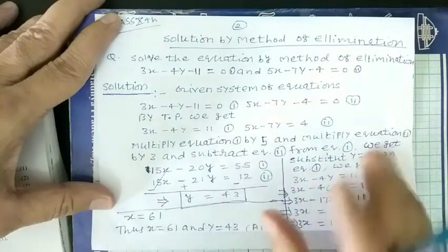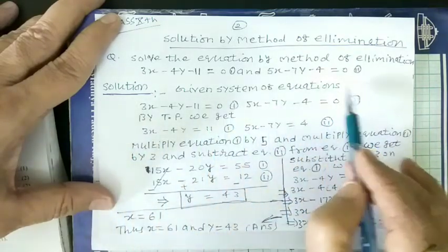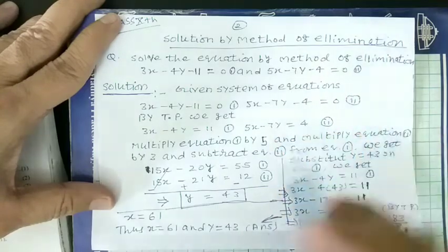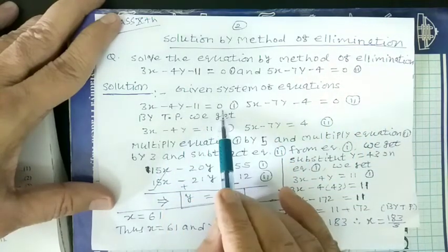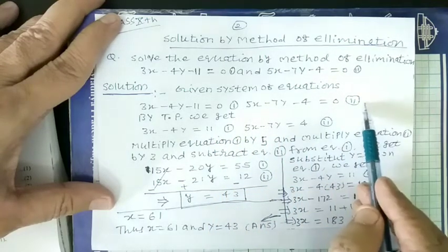Given system of equations, we write in the solution given system of equations means which equations are given. 3x minus 4y minus 11 is equal to 0 and 5x minus 7y minus 4 is equal to 0, equation number 2.